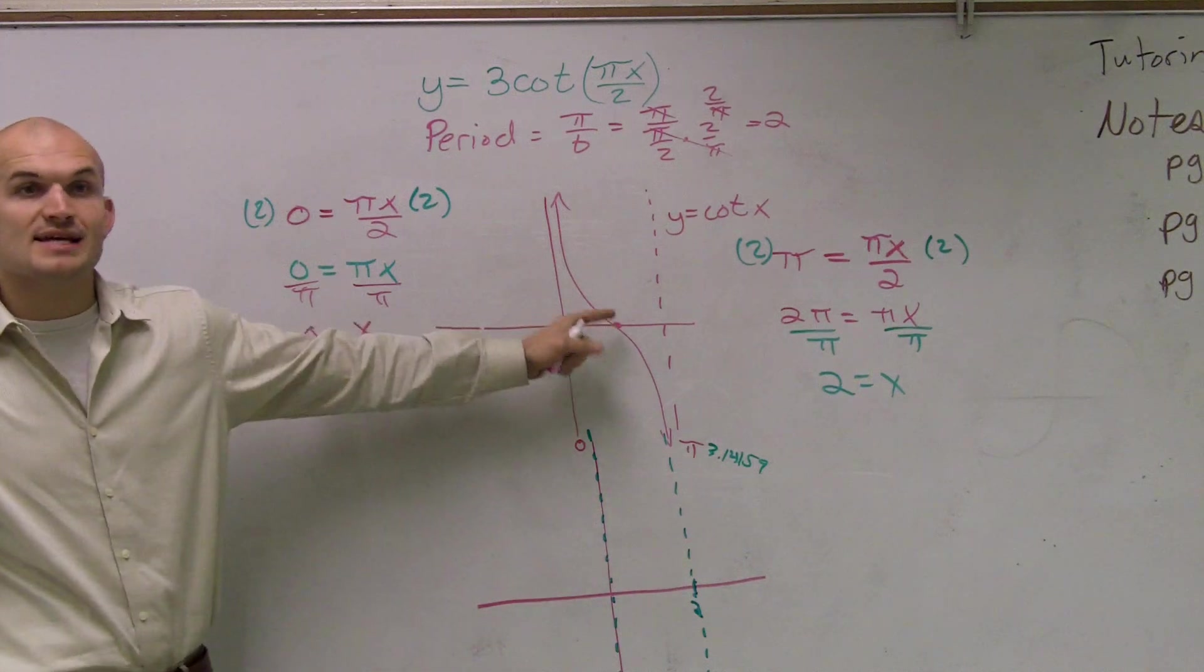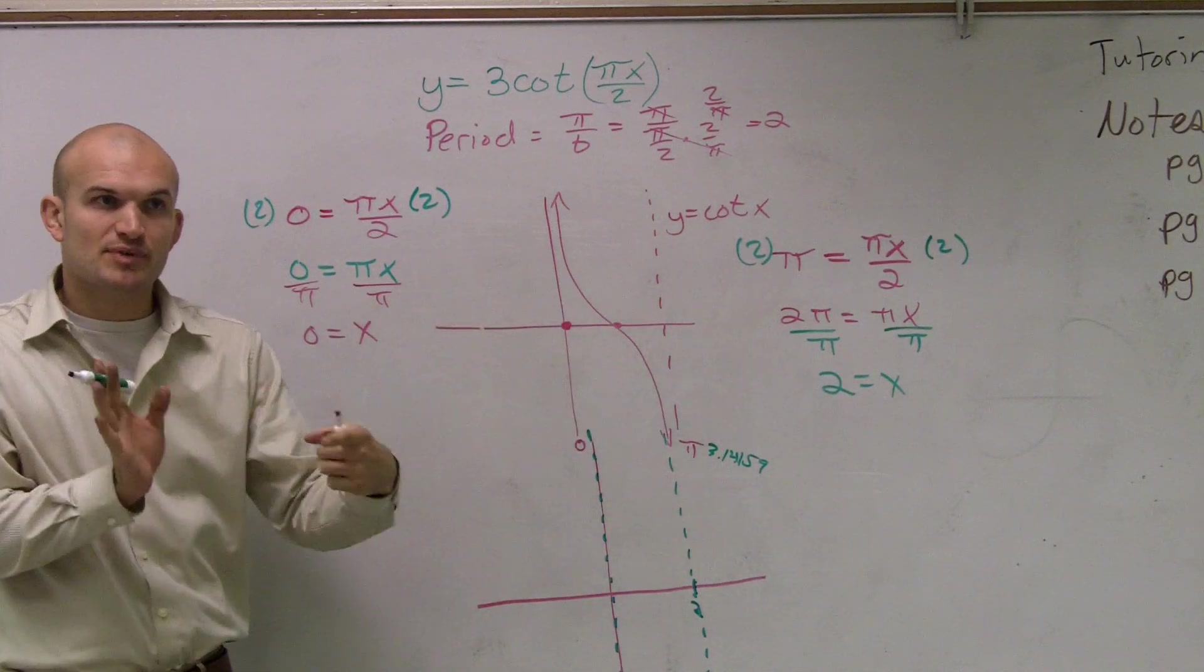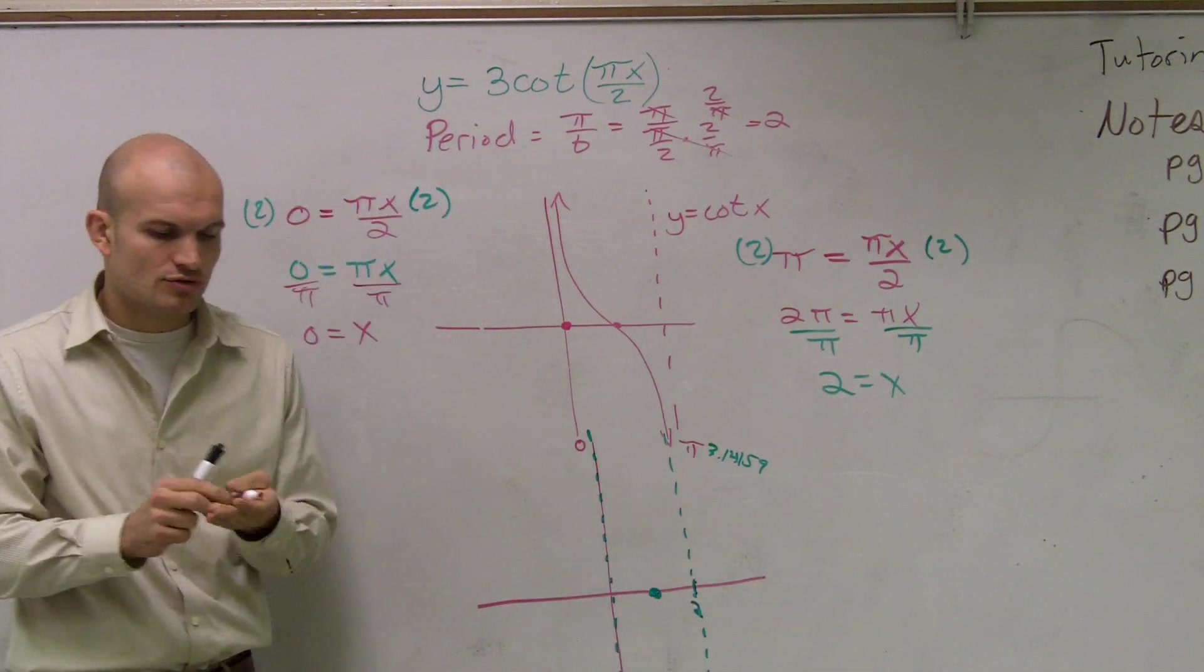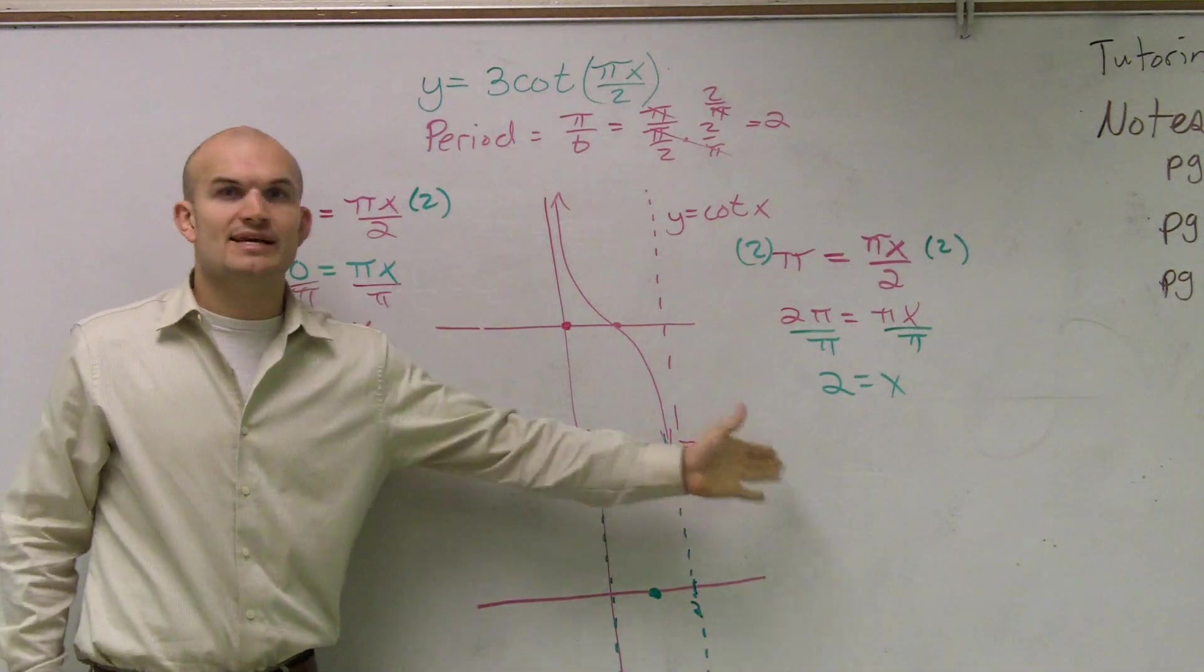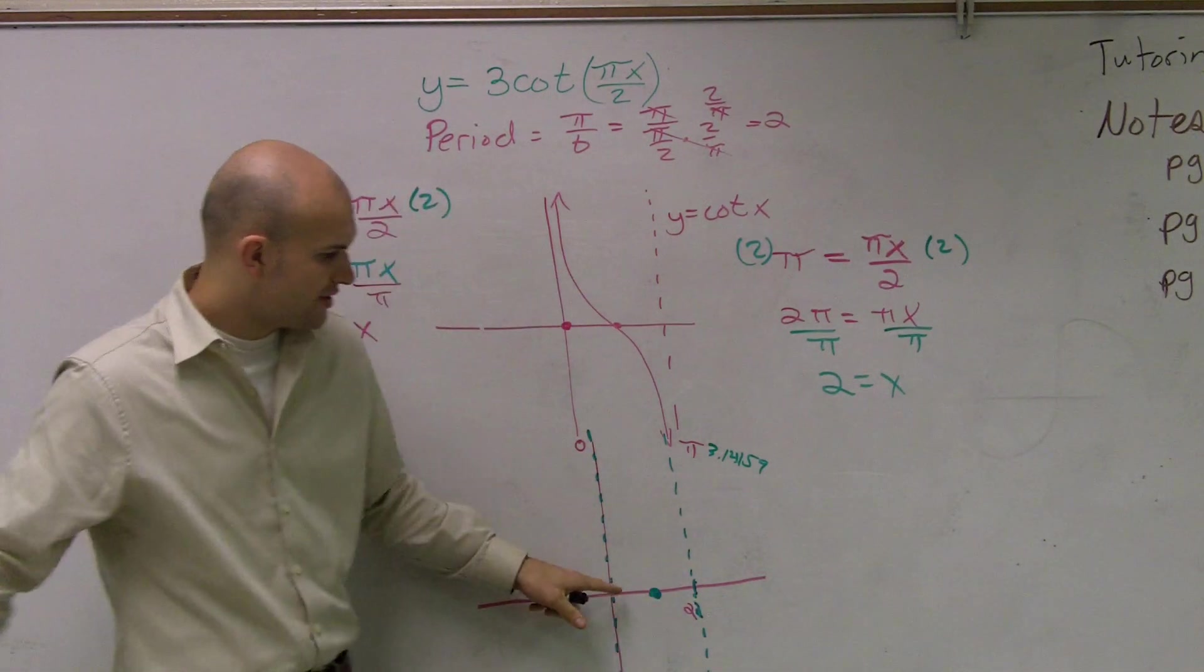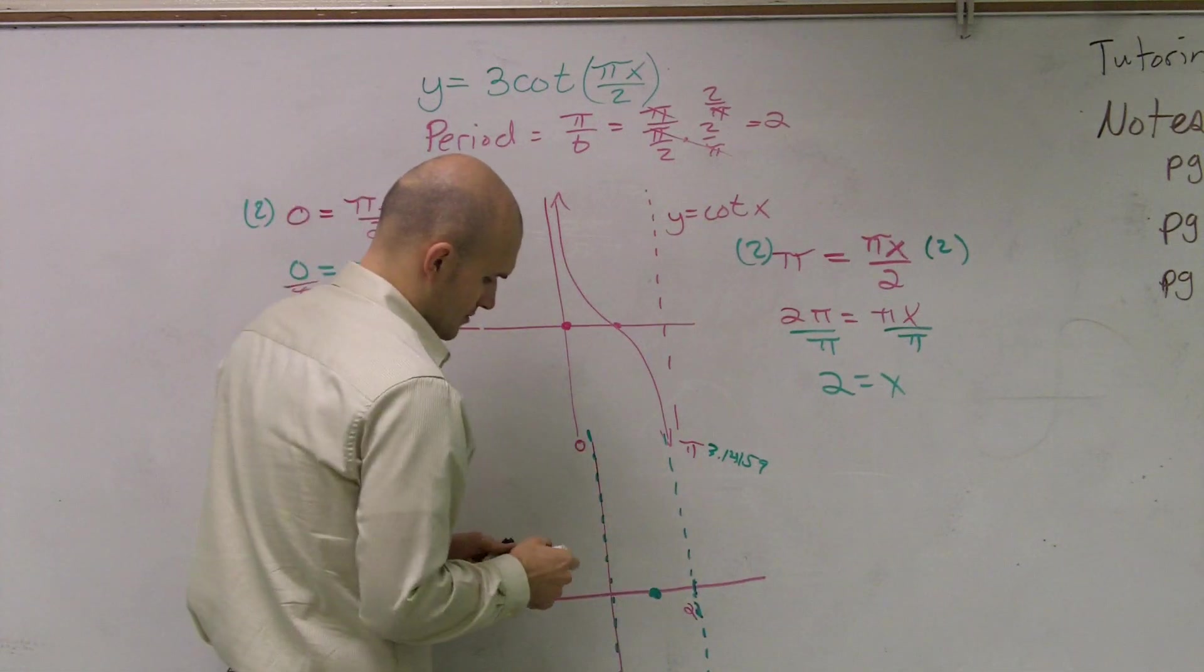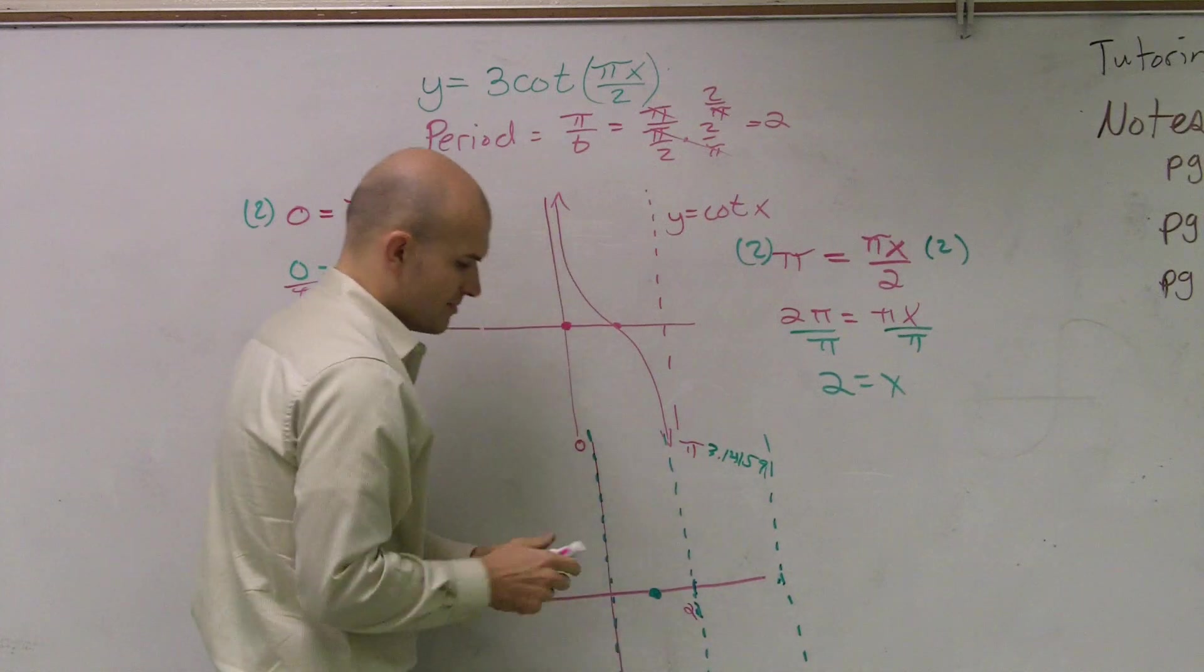Now, one thing you need to understand is this intercept for your normal graph, for your parent graph, was at pi over 2. So it's halfway between your two intercepts. So it splits it. So if this is at 2, my new intercept is going to be at 1. The next thing we need to do is determine, well if I need to do another period, where is my next intercept going to go? Well ladies and gentlemen, if here from here to here is 2, how long is our period? Our period is how long? 2. So my next asymptote is going to be another 2 more over, which will give us 4. So our next period is going to be somewhere right there, which is going to be at 4.